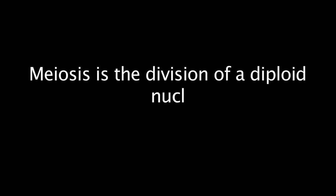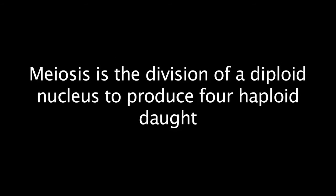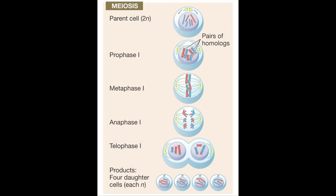Meiosis is the division of a diploid nucleus to produce four haploid daughter cells. In meiosis, two sets of chromosomes are divided among four daughter cells, each of which has half as many chromosomes as the original cell. The four haploid cells are the result of two successive nuclear divisions.